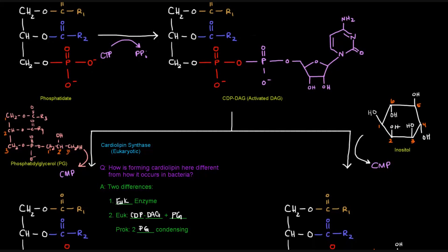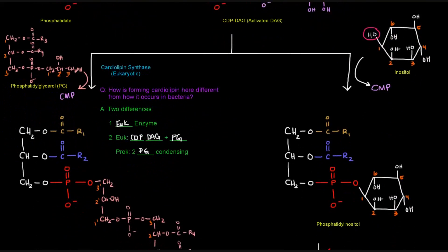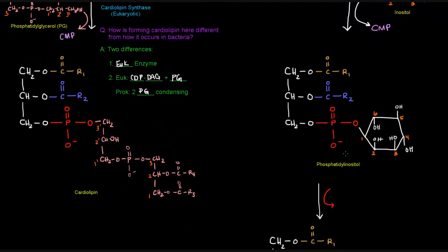This OH here, this number one OH on inositol, will actually be connected to this phosphate group, the red one, as the CMP falls off. And we'll get phosphatidyl inositol shown here. And so that's that linkage that was made there.